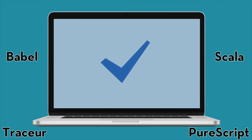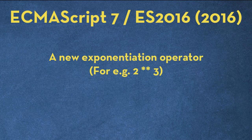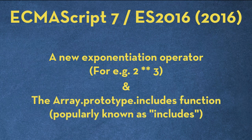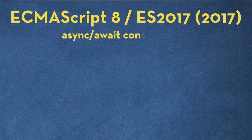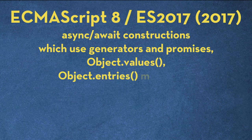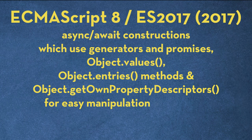ES7 was finalized in 2016 and featured support for a new exponentiation operator — for example, 2 raised to 3 uses two stars — and the Array.prototype.includes method. ES8 was released in 2017 with features such as async/await constructions using generators and promises, Object.values and Object.entries methods, the getOwnPropertyDescriptors method for easy manipulation of objects, and additional features for shared memory and atomics.